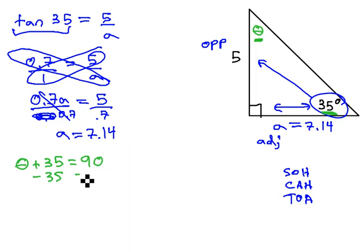Theta and the 35 have to add up to 90. Theta plus 35 equals 90. We'll just subtract 35 from both sides and find out that theta, the missing angle, is 55 degrees.